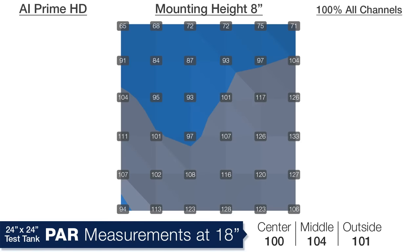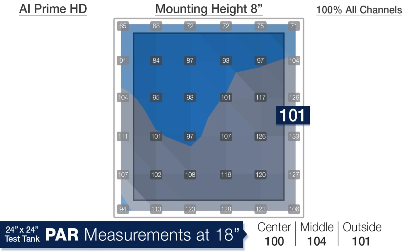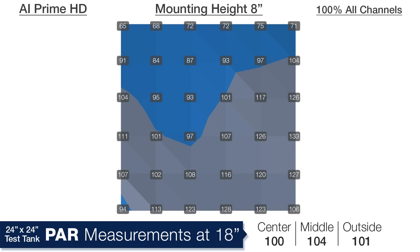Now near the bottom at a depth of 18 inches, the lens and distribution system is what I would call near perfect performance with 100 PAR in the center, 104 in the middle ring, and 101 in the outside ring, the back of the tank being a bit lower because it is painted black.